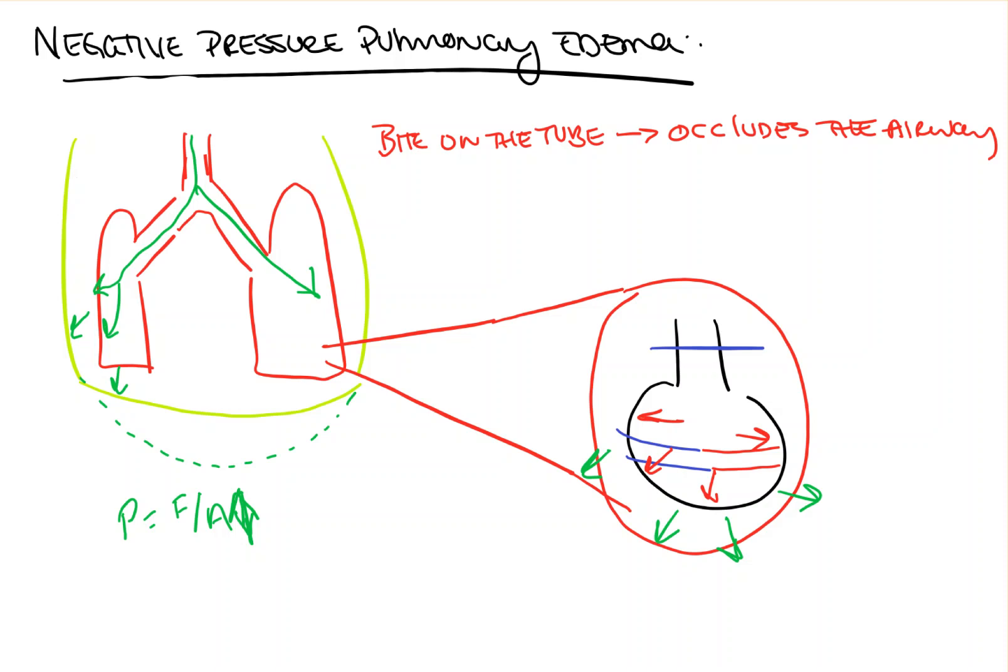So, this drop in intrathoracic pressure in the intrathoracic space leads to an increased transmural pressure across the capillaries, and this is then reconciled by influx of blood and fluid in the pulmonary capillaries into the alveoli and into the lung parenchyma in order to equalize the pressures.